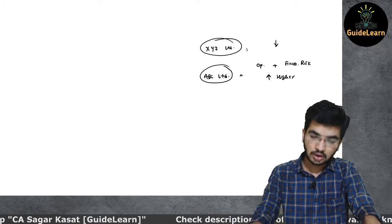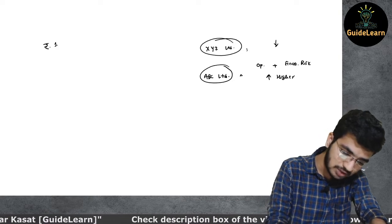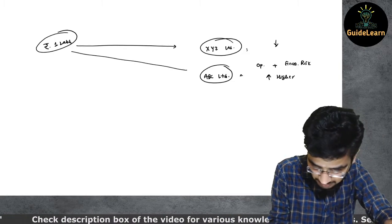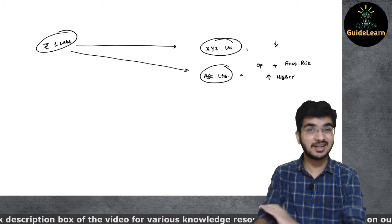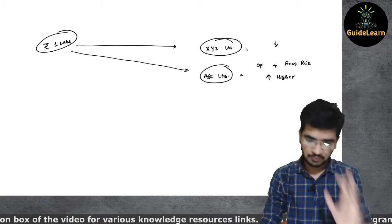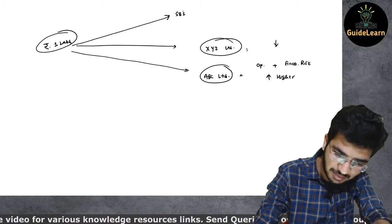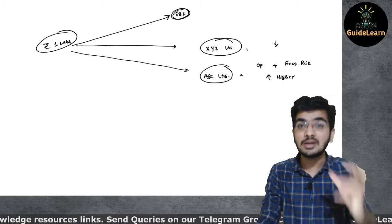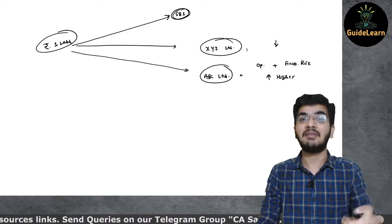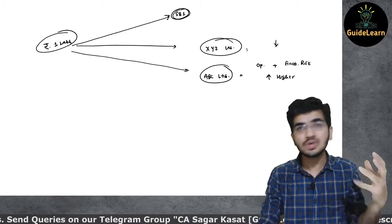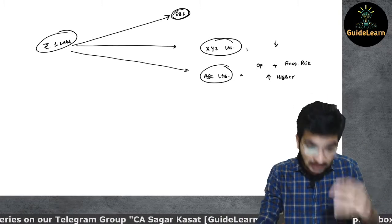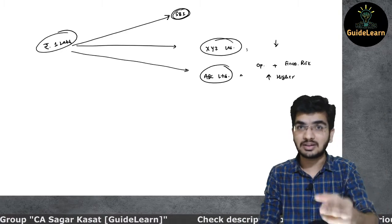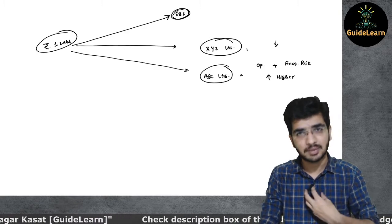Now, suppose I have Rs. 1 lakh to invest and I need to decide whether to invest in XYZ Limited or ABC Limited. I also have one more option: to invest in SBI — State Bank of India — which is a public sector bank considered to have almost negligible risk. I cannot say zero risk, but negligible risk, because billions of people trust this bank in India. I will be very much secure in my position as compared to other investment options. So investing in SBI carries negligible risk.